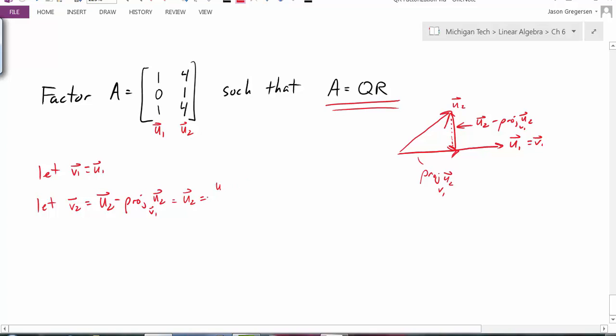This projection is going to be U2 dotted with V1 divided by V1 dotted with V1 times the vector V1.